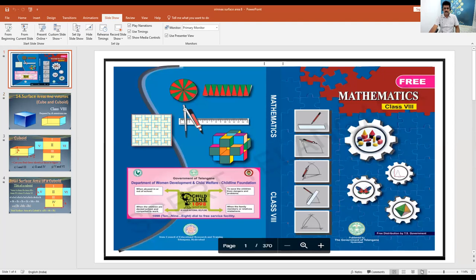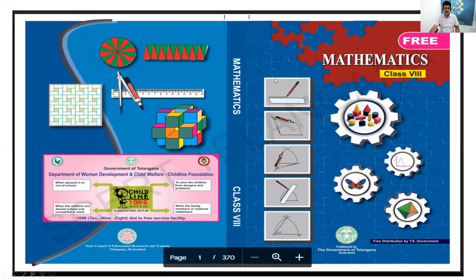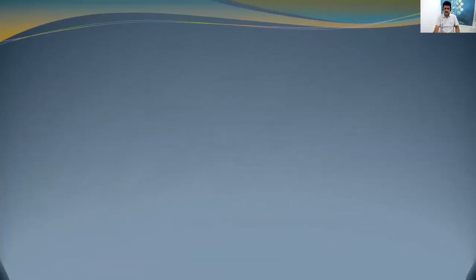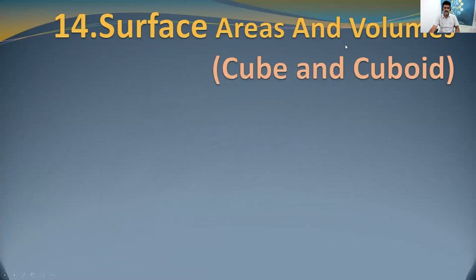Students, see here — this is the cover page of your textbook, Class 8th Mathematics. The topic in your textbook is surface areas and volumes. We are going to discuss Chapter 14, that is surface areas and volumes of only two objects: cube and cuboid. These two are three-dimensional objects.